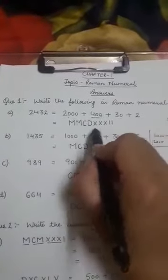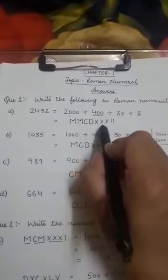Then for 30 I know X, X, X. It is for 30 and 2, I, I.